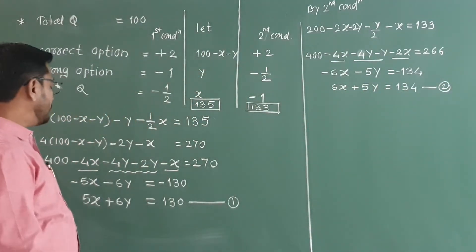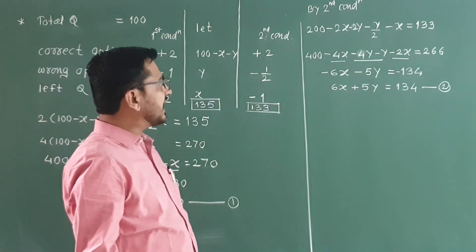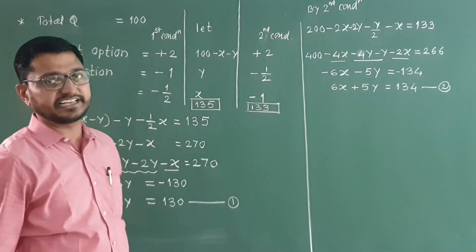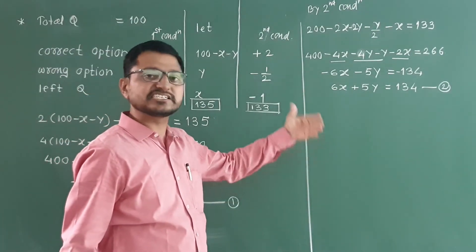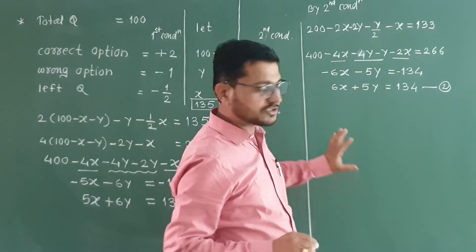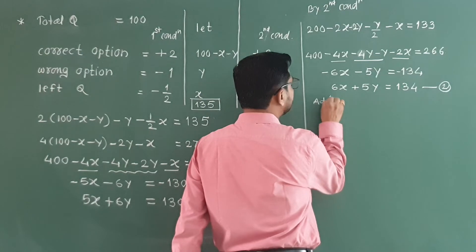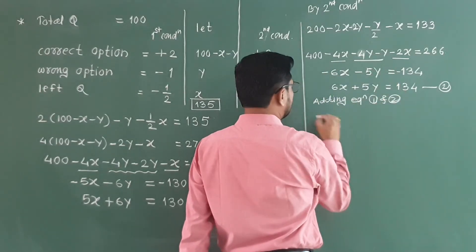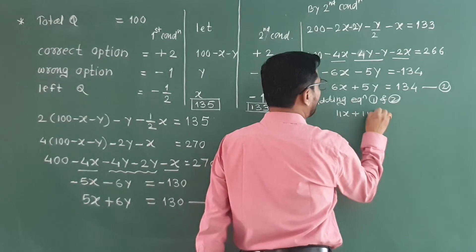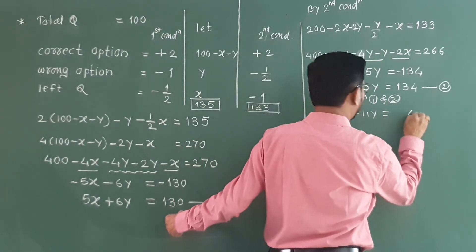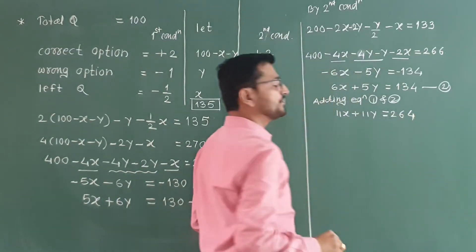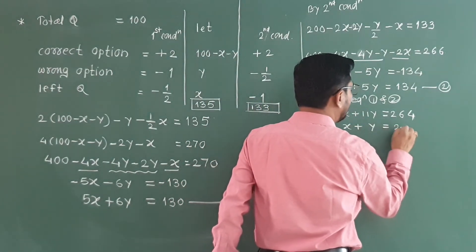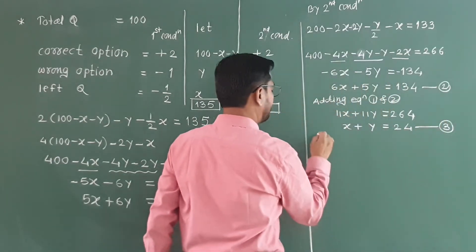Now, multiply equation 1 by 6 and equation 2 by 5. We get 30x plus 36y equals 780. And 30x plus 25y equals 670.